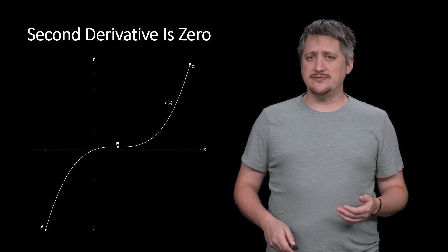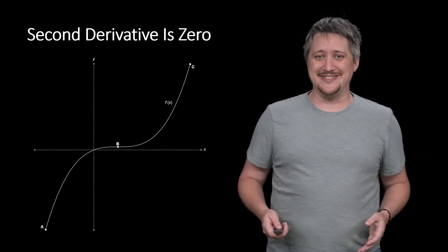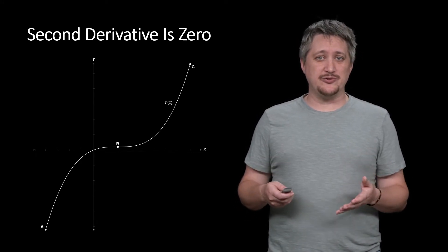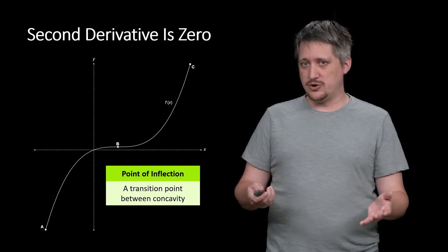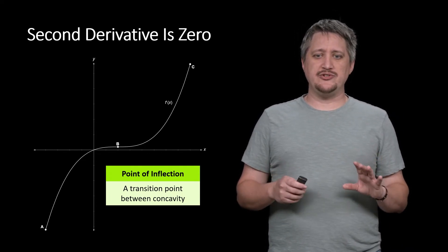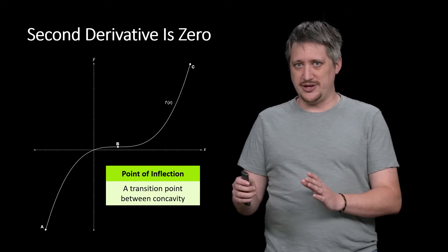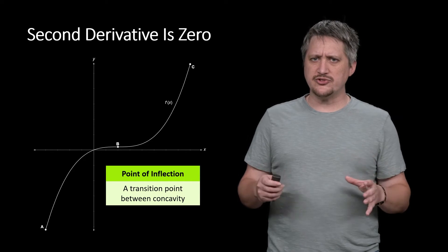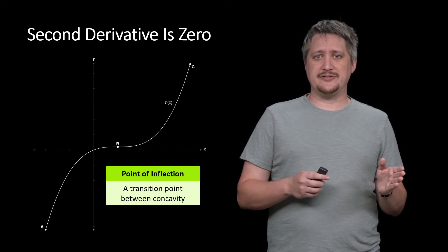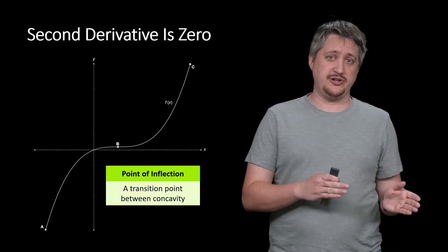But at B itself, it's sort of concavity neutral. Like it's going from one to the other. So this is one of those points that we are calling points of inflection. Point of inflection is really just a term we use to be the point that transitions from one to the other. Just like how we had extrema, maximum or minimum is a point that transitions from increasing to decreasing or decreasing to increasing.